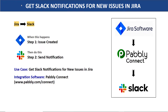Hello everyone. In this video, we will learn how to get Slack notifications for new issues in Jira. Imagine this: you are a team leader and you are using Jira to create issues. Once you have created an issue, you want to notify your team members on Slack so that they can sort out this issue.